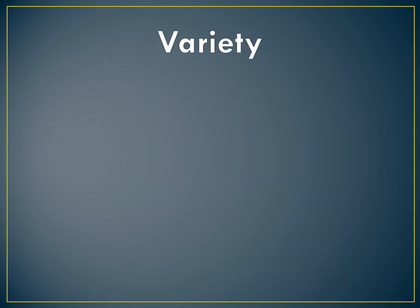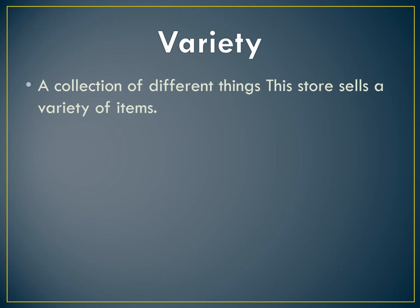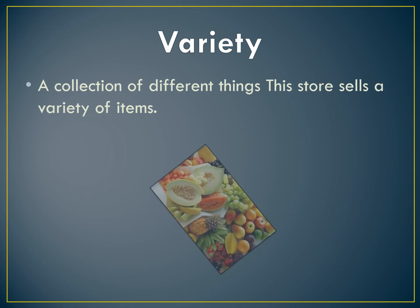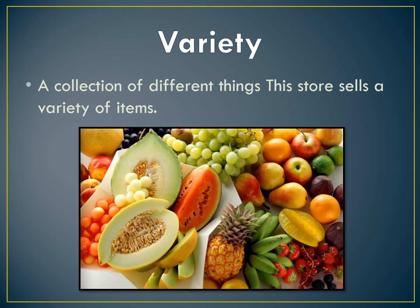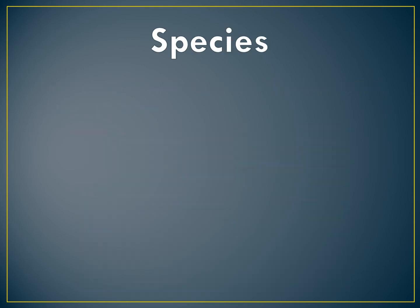The next word is variety — a collection of different things. For example, this store sells a variety of items. The picture will help you understand: there is a variety of fruit there. In the book they were talking about animals, but here's a picture to help you understand — lots of different fruit, lots of different animals.